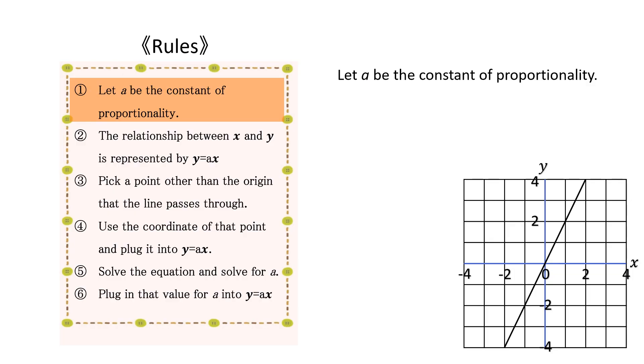First, let a be the constant of proportionality. Since the constant of proportionality is a fixed number, only one number applies.